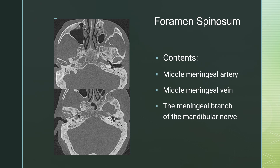Foramen spinosum contains the middle meningeal artery and vein, as well as the meningeal branch of the mandibular nerve. The easiest way to find foramen spinosum is to look for foramen ovale and then look for the small foramen posterior and slightly lateral to it. Here is foramen spinosum on a temporal bone CT on the left side, and here is foramen spinosum on CT — on the right side, here is foramen ovale anteriorly. Whenever I look at images of the skull base, even on temporal bone CTs, I always look to make sure there's an ovale and a spinosum on both sides.